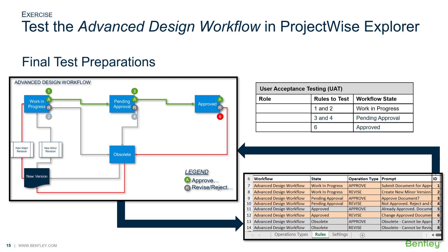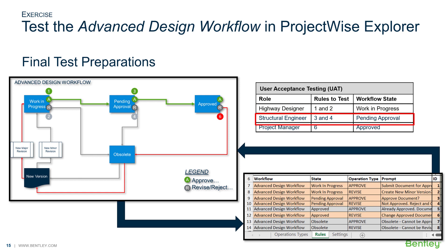Let's see where the rules fall in the workflow and which role will be testing each rule. The highway designer will need to test rules 1 and 2, the structural engineer will need to test rules 3 and 4, and the project manager will need to test rule number 6. For UAT, the users will not need to know which rules they are testing — rather, they need to know what button to press and what outcome is desired.